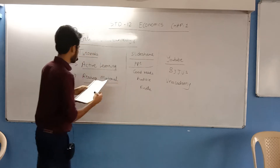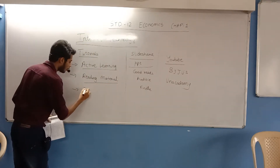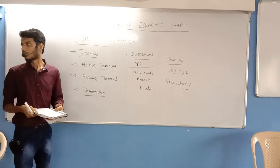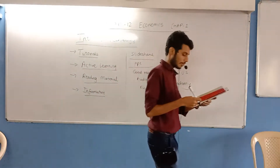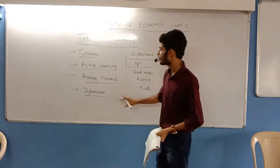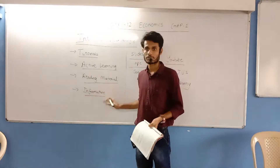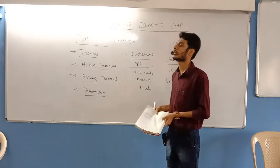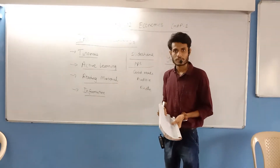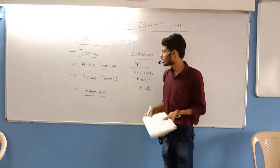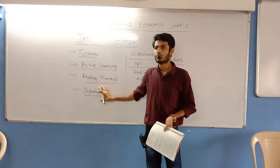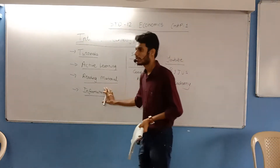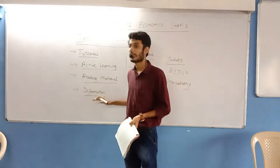The next point says that you can search a lot of information online. For example, there are certain students who are confused about what course they will take up after completing their degree. So if they want to get information about different courses which are of their interest, they can go to Google and search about different courses present in different universities near them.